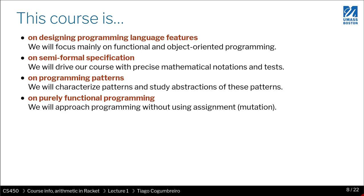So what we're going to learn — the main focus — is how do we design programming language features. For that, we need to learn what programming language features exist and then how we implement them. We are going to cover functional and object-oriented programming. We are going to use semi-formal specifications — a mathematical way to describe the algorithms we discuss. This course is also on programming patterns, which are not specific to functional programming and can be used across many programming language models.